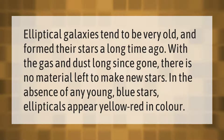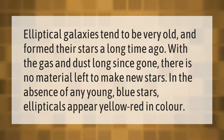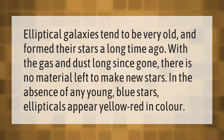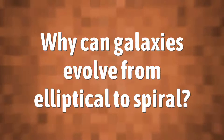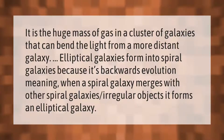Elliptical galaxies tend to be very old and formed their stars a long time ago. With the gas and dust long since gone, there is no material left to make new stars. In the absence of any young blue stars, ellipticals appear yellow-red in color.